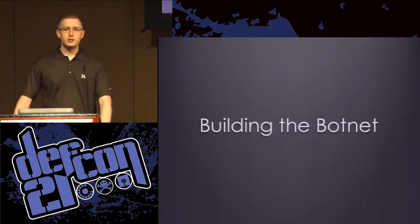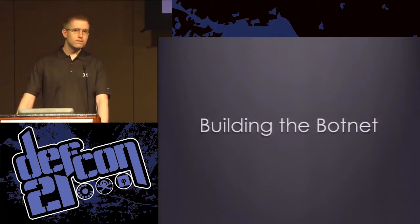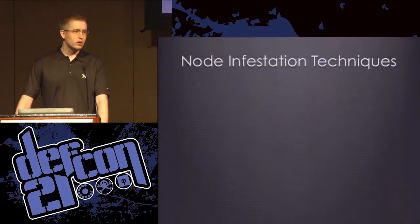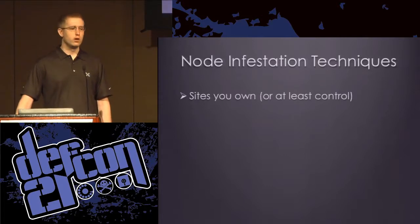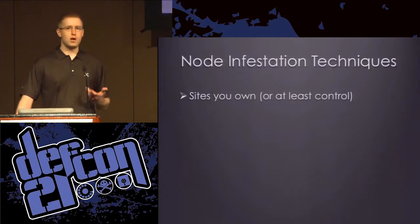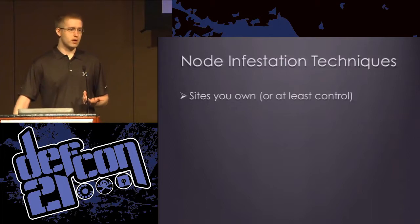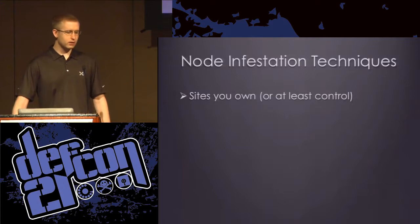So let's look at what it takes to build a botnet on top of web browsers. The first step is node infestation — how do we get our code running on the node? The first and most obvious technique is to simply use a site that you own. If you own a site getting a thousand hits every five minutes, you have the capability to execute whatever code you want on a thousand different web browsers every minute. Most sites don't do anything with that, but there's definitely the potential.